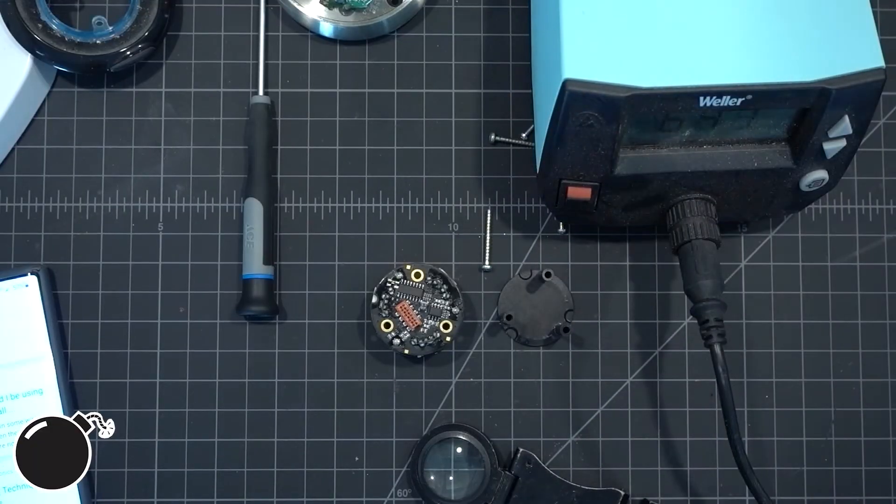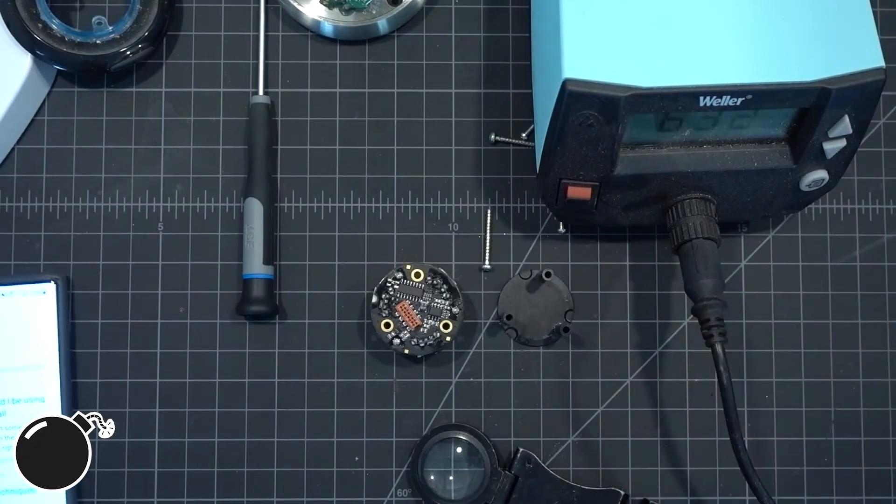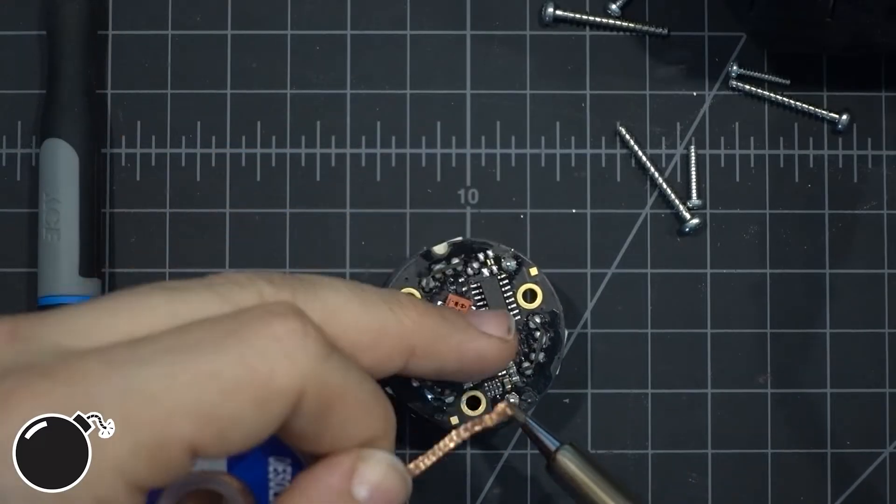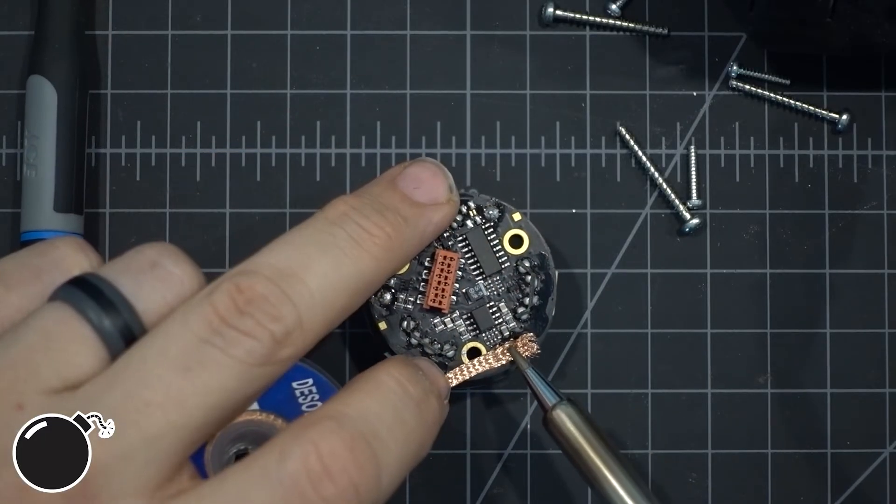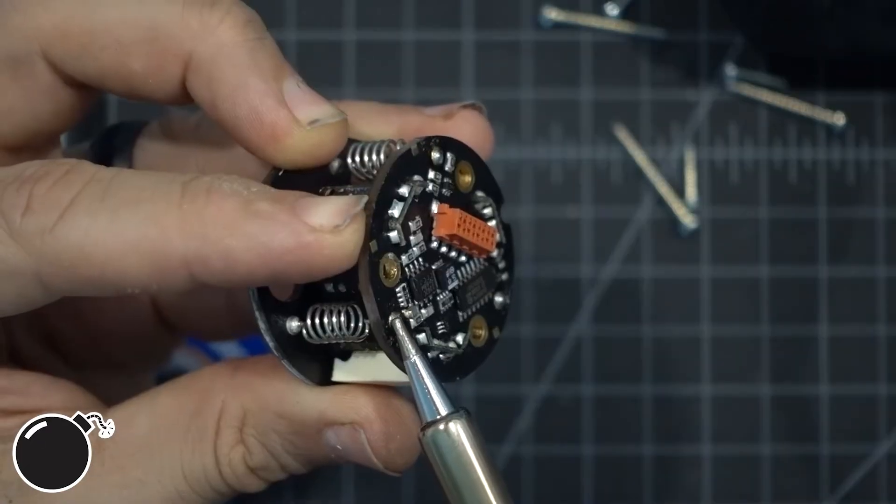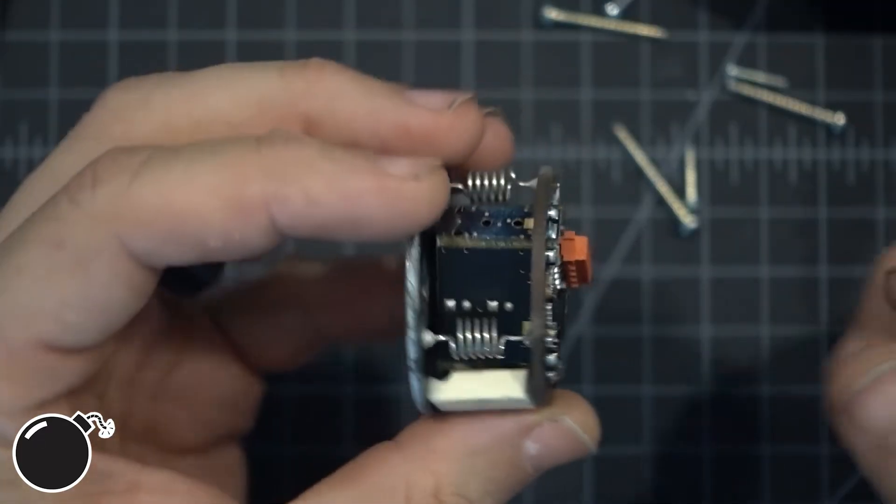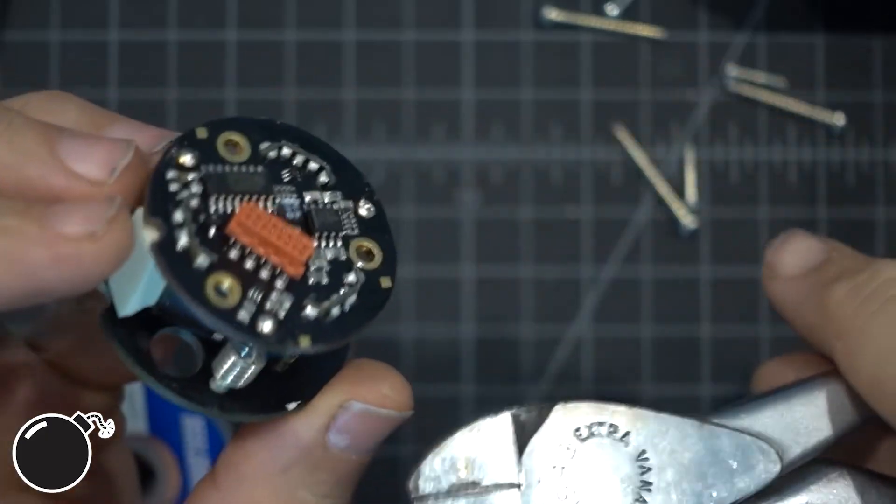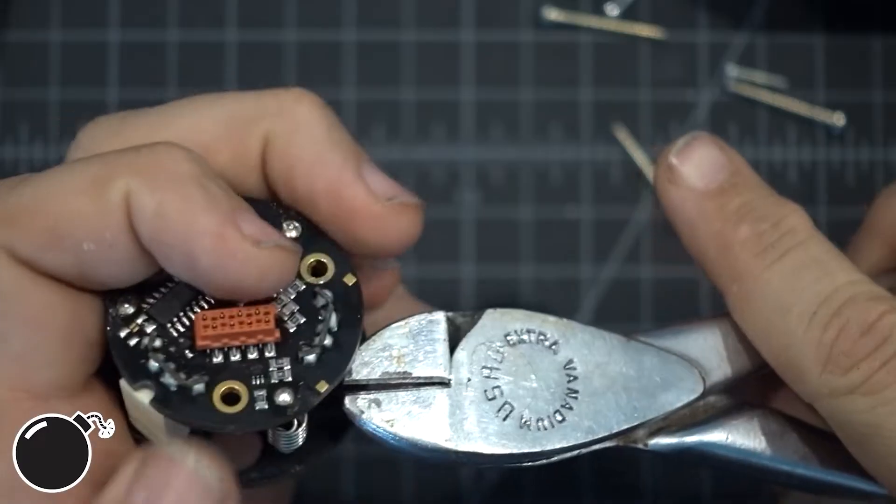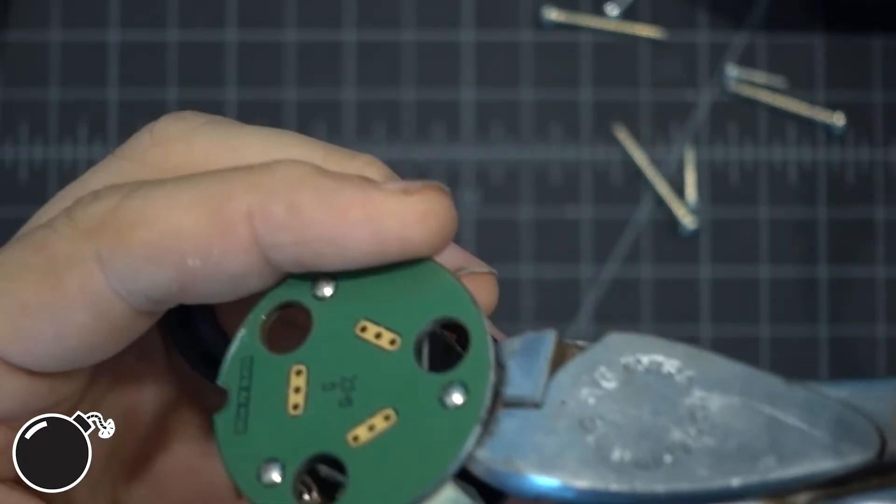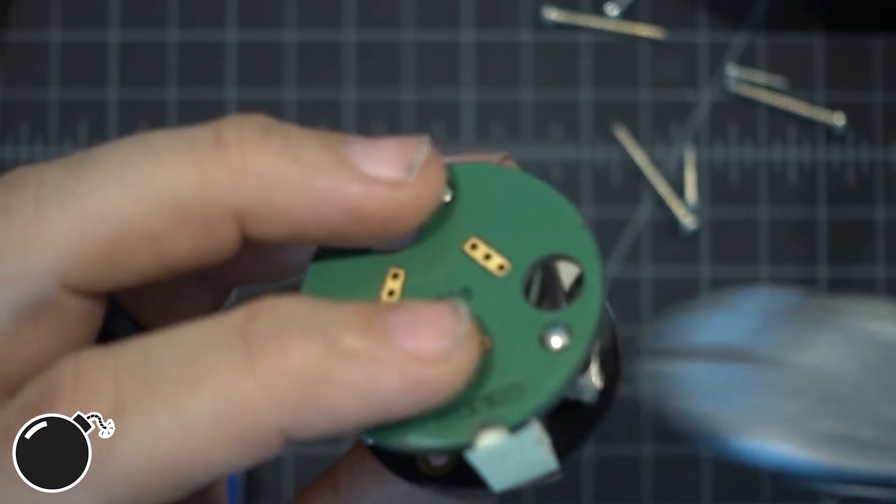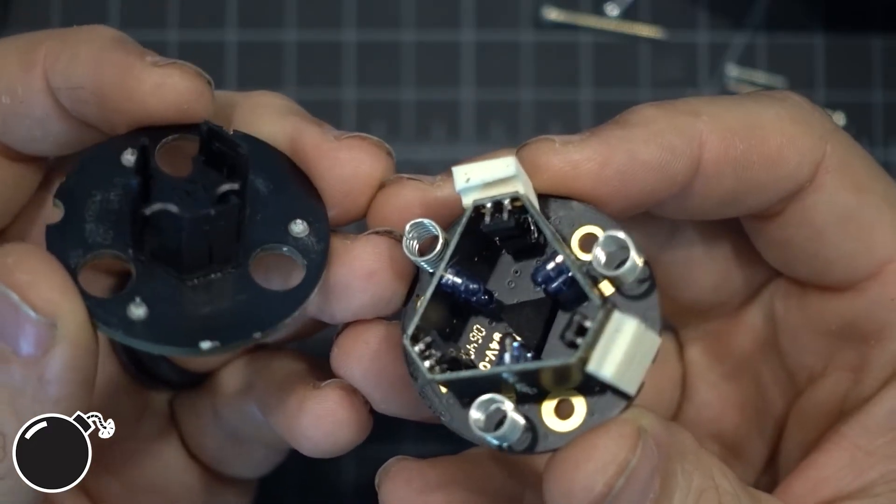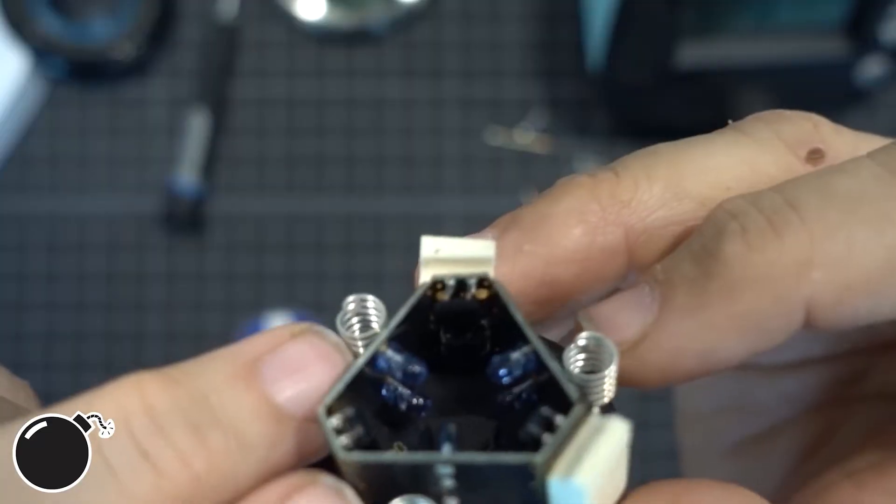I just got this fancy Weller soldering iron that I haven't really used yet. So let's see how this goes. All right. Everybody can yell at me in the comments, tell me how to actually desolder things. I wouldn't mind learning that, but I'm just going to cut these. Oh, that's pretty awesome.